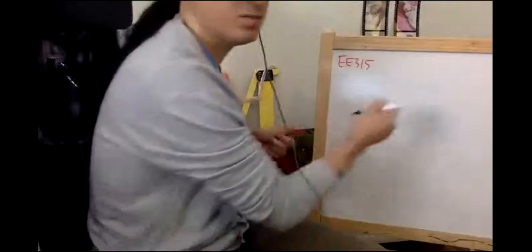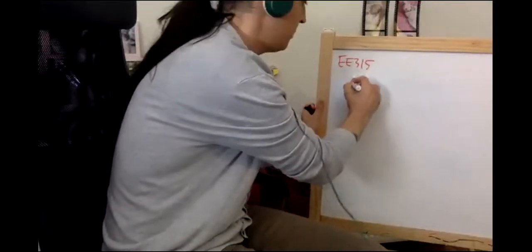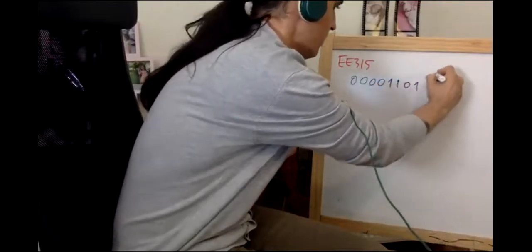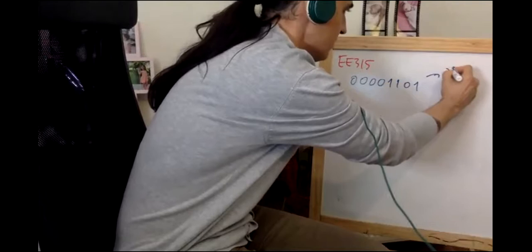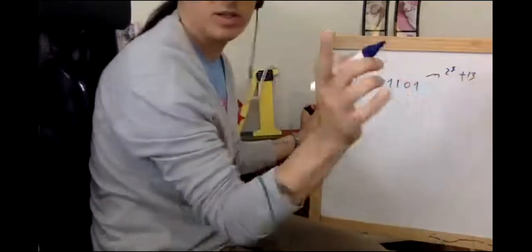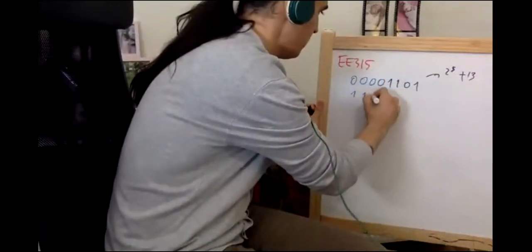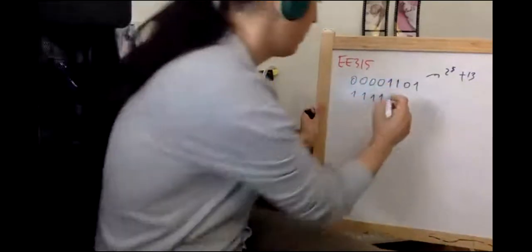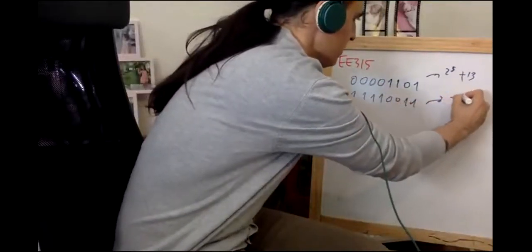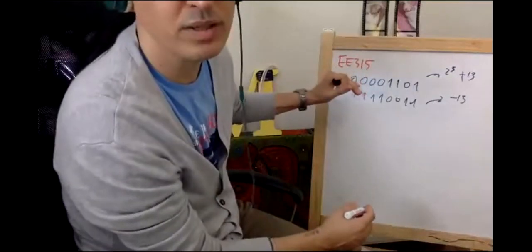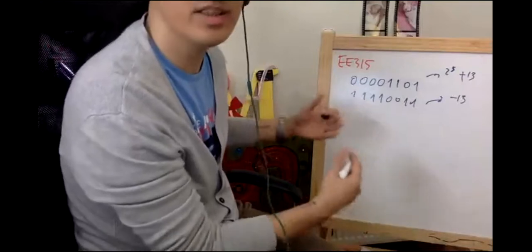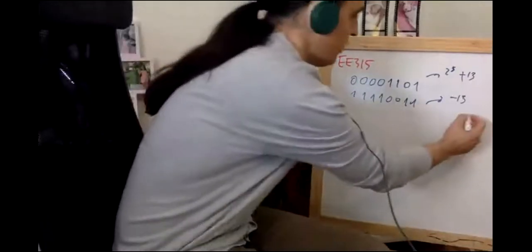Let me show an example. This is plus 13 in two's complement: 0000 1101. And this is minus 13 in two's complement: 1111 0011. I know these are two's complement — somebody told me. Knowing that, I'm adding these two numbers. If you add them, the result should be zero.